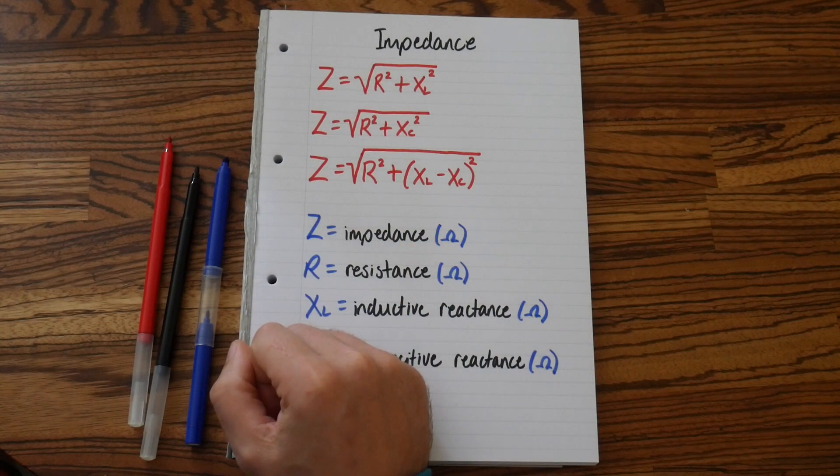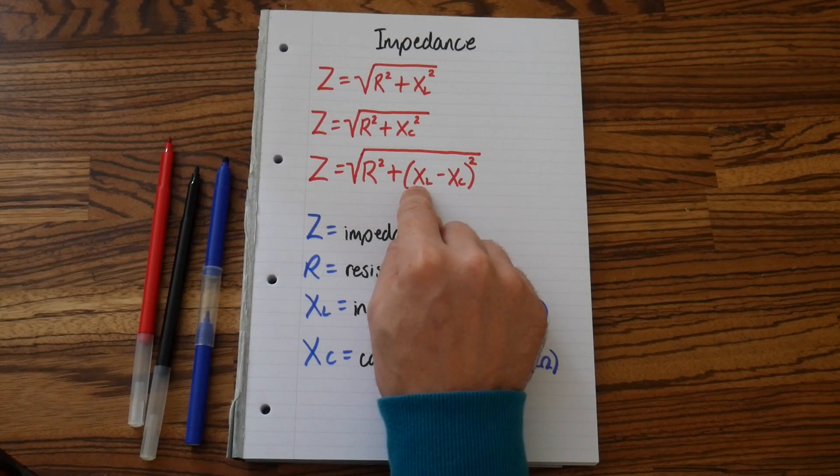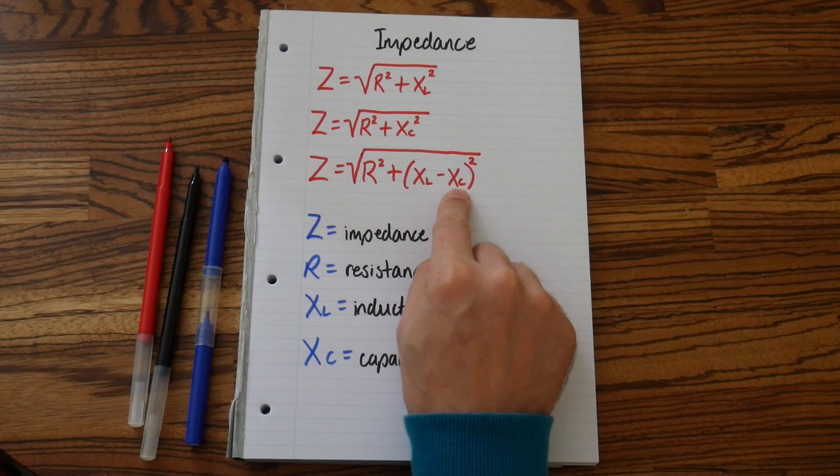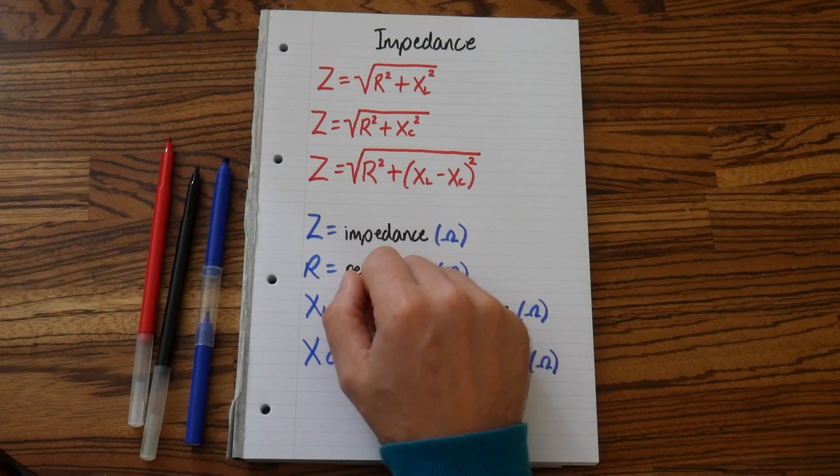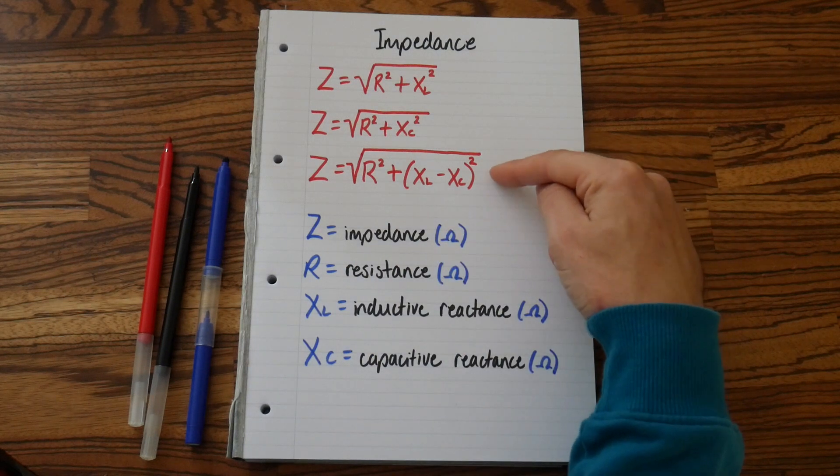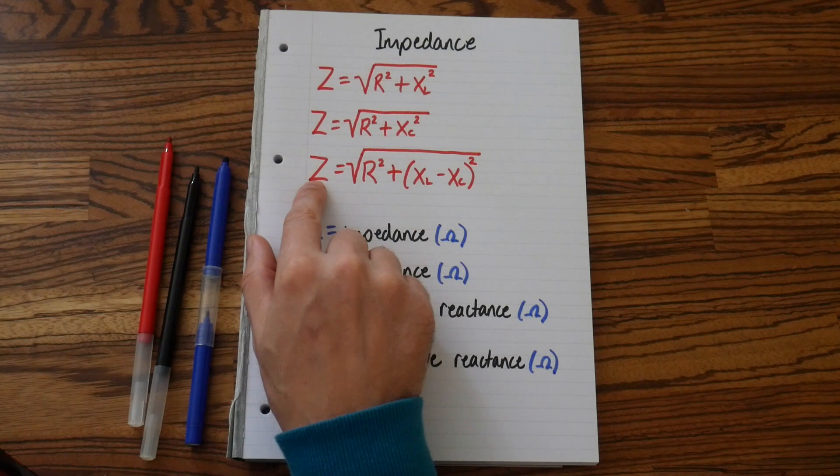And the last one, if you had a circuit that had a resistor, an inductor and a capacitor, you would then work out the reactance of the inductor and the capacitor. And then you would use this formula to then calculate the total circuit impedance.